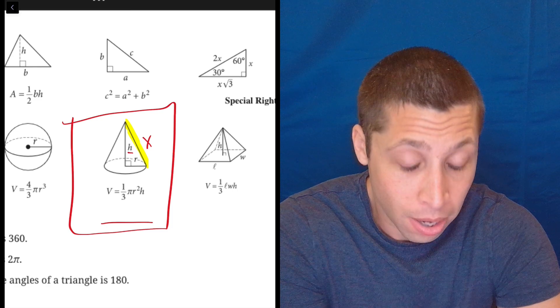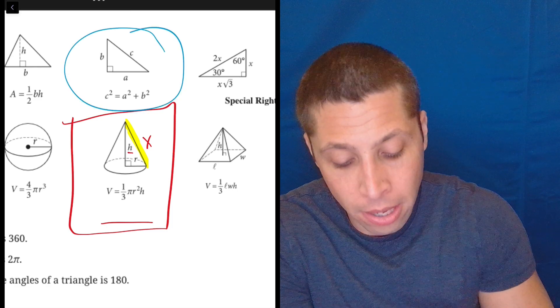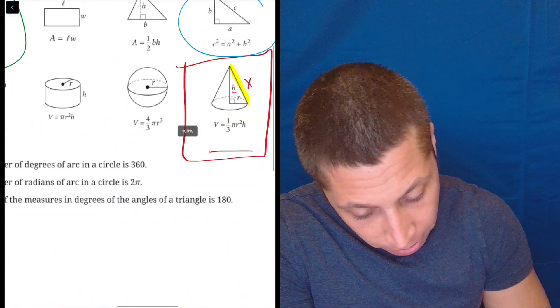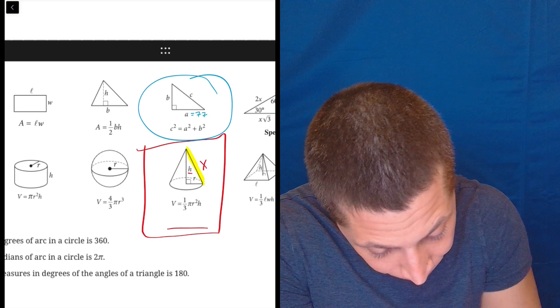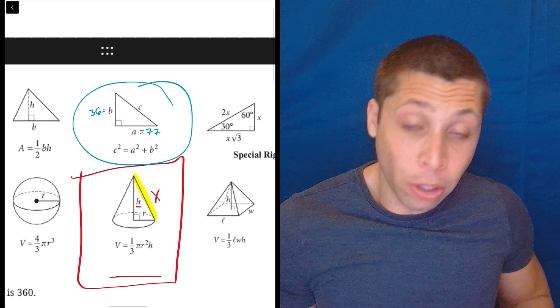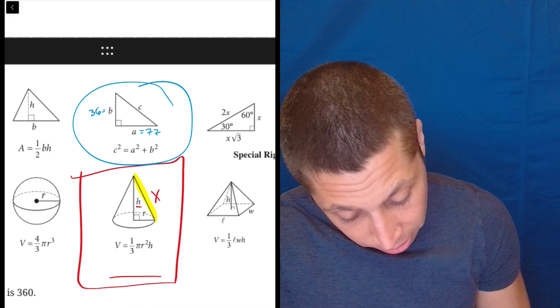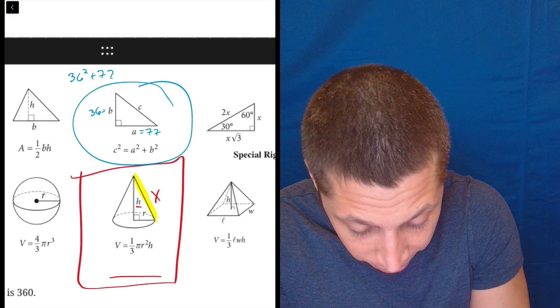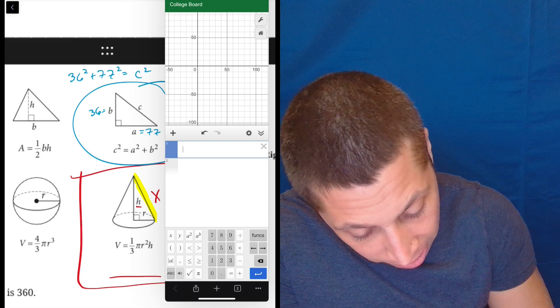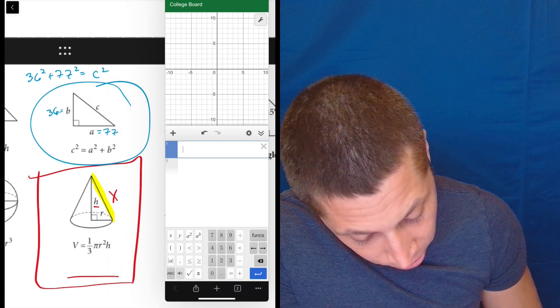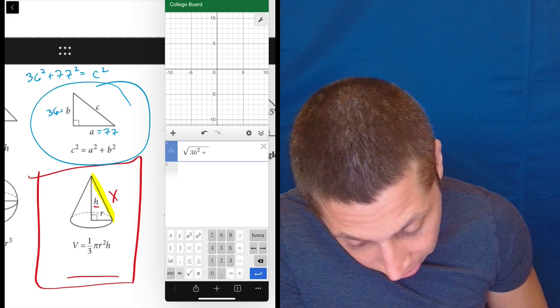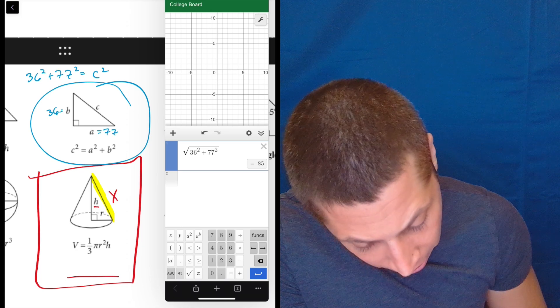And we're looking basically for the hypotenuse of that thing. So it's going to be a little bit of this formula, Pythagorean theorem, right? So the radius we said was 77, and we said the height was 36. And we are looking for C. That's going to be our thing. So let's just do it. So that's going to be 36 squared plus 77 squared is equal to C squared. I'm going to go in here now and do it in Desmos. So I'm going to do the square root of 36 squared plus 77 squared. And I get 85.